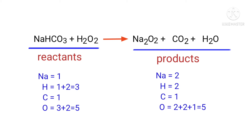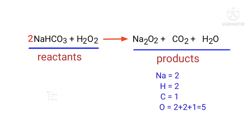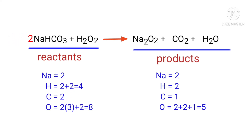In this equation we need to balance the sodium atoms first. To do this we need to put a coefficient of 2 in front of NaHCO3. The sodium atoms are now balanced.